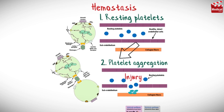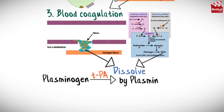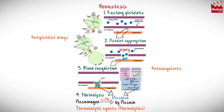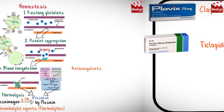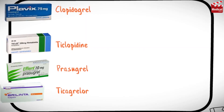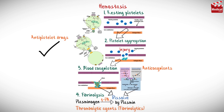In the previous lecture we started discussing the drugs used to prevent the formation of unwanted clots in the blood vessels. We said that there are three groups that can be used for this purpose: the antiplatelet drugs, anticoagulants, and fibrinolytics. We talked about the antiplatelet drugs, so today we'll discuss the anticoagulant drugs.